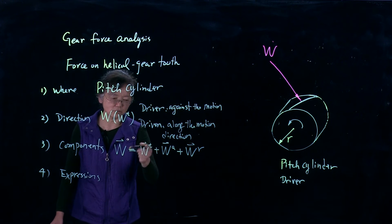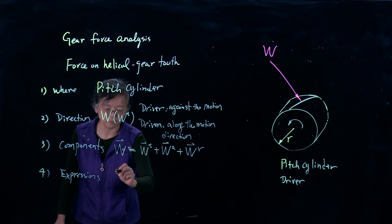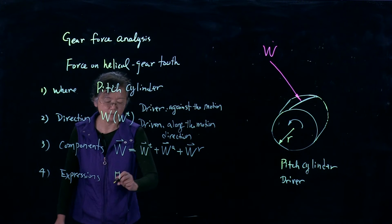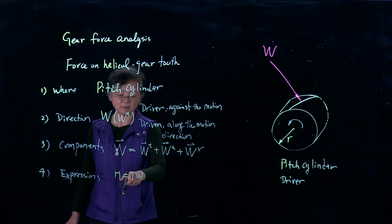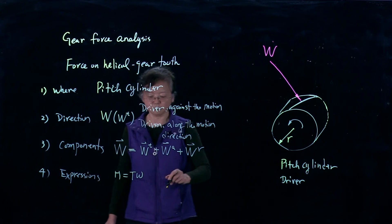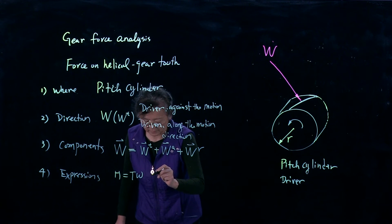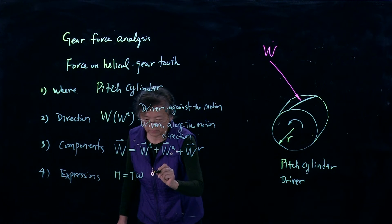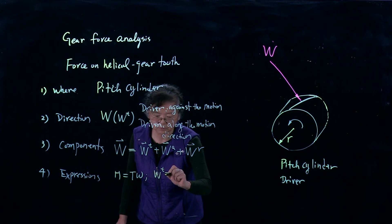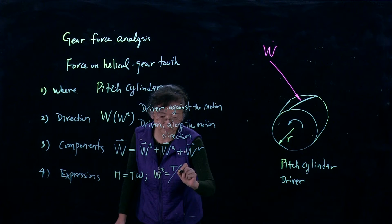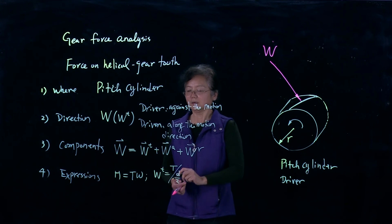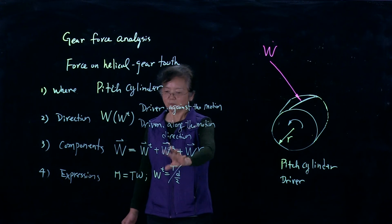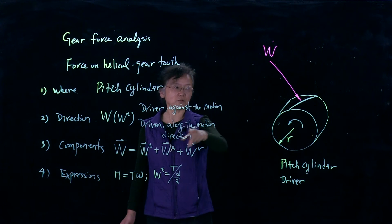Power is related to torque: power equals torque times omega. So knowing speed and power, we can find torque. Then from torque we can find Wt: Wt equals torque divided by the radius, which is the pitch circle diameter divided by 2. From here we can solve the rest.